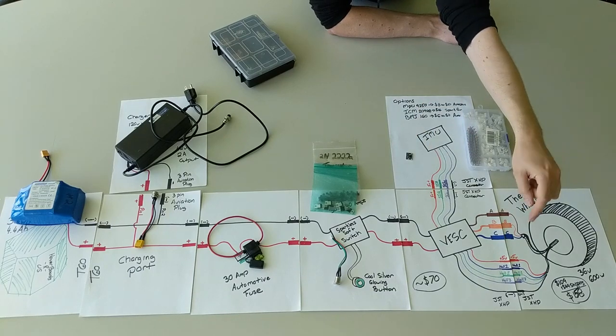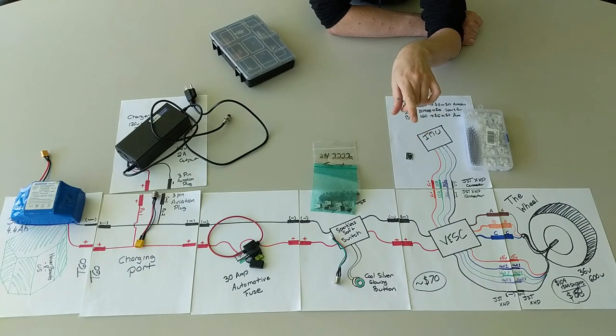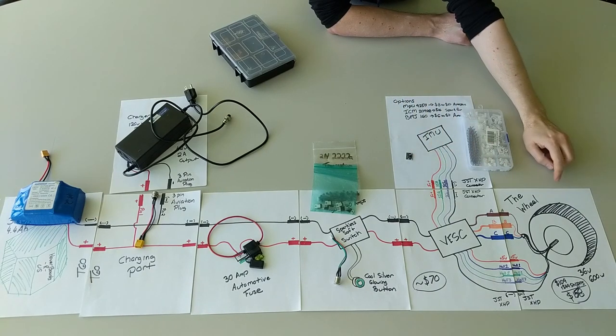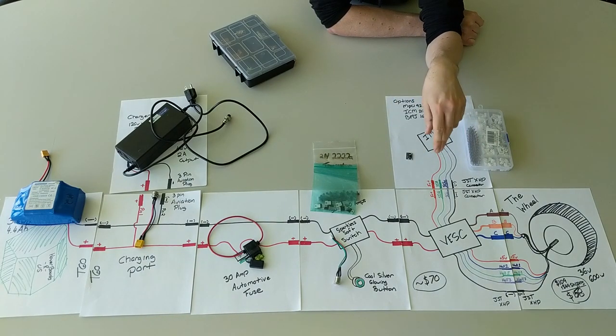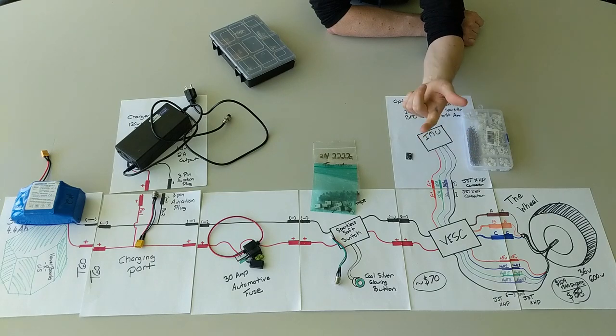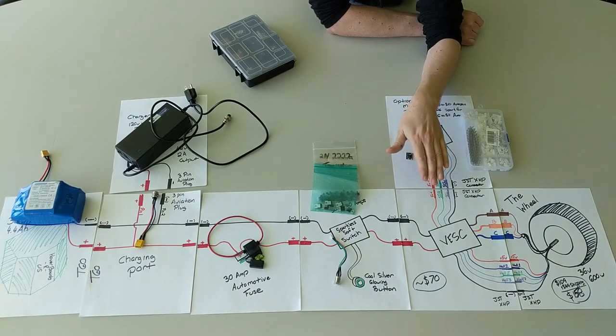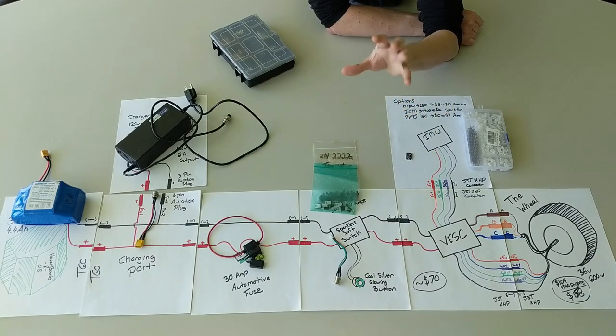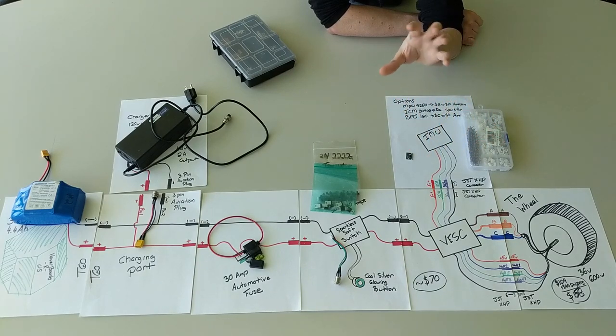The other set of connections down here on the bottom of the page, which are also going to use a JST connector, are for the three Hall effect sensors inside the wheel. There's three Hall effect wires and two additional wires, one to provide power and one to ground. These allow the VESC to know where in its rotation cycle it is at any given time. That's how the ESC knows which coils to trigger and sequence to know whether to accelerate, brake, go forward, or go backwards.